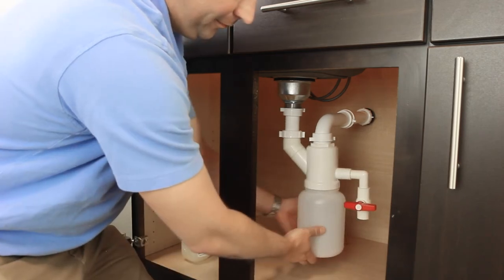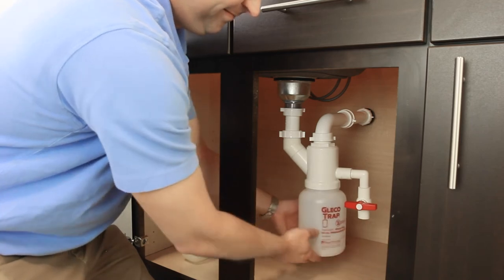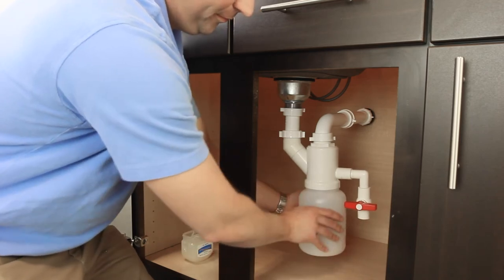Now simply screw on the new bottle, making sure the side drain is in the horizontal off position. And your GlecoTrap is ready to go again.